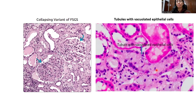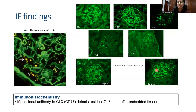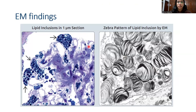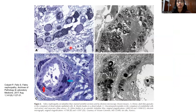Immunofluorescence is of course negative. There is IHC against GL3, but it is not commonly used in practice. Electron microscopy is confirmatory — we see lamellated myelin figures, or zebra bodies as they are called. These can be seen in the podocytes, as well as in the tubular lining epithelial cells of the DCT and in the smooth muscle cells of the arteries.